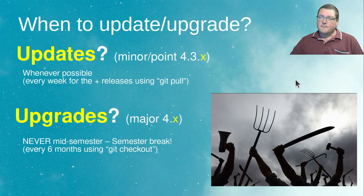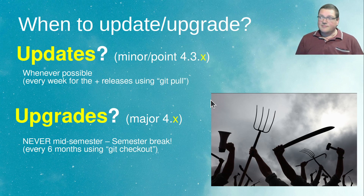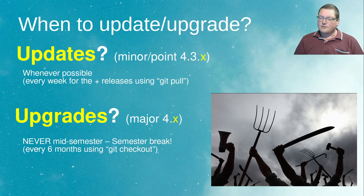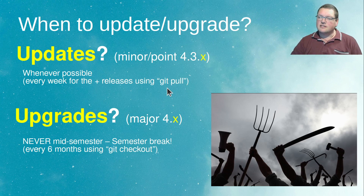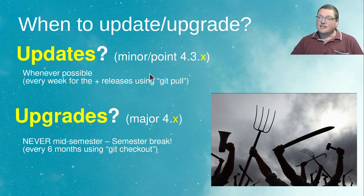So when do you do both? I would suggest that updates you want to do ideally weekly. Even on a lower level than the minor update you have point releases, and you also have the plus releases. Doing a git pull every single week would be a great thing to do. They usually come out on weekends — Saturday, Sunday or something like that. Doing a git pull on the weekend, you can get the latest fixes and make sure you keep your Moodle up to date.